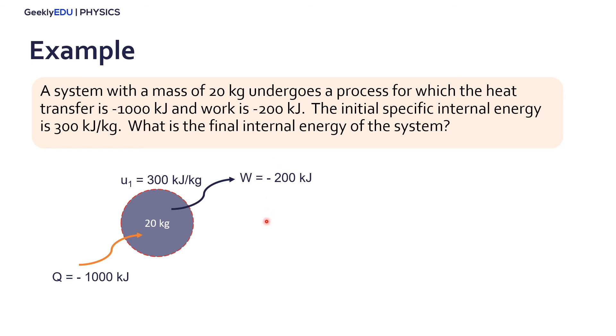It's very important to know the signs here and understand where the energies are going. So let's apply the first law of thermodynamics, we have the variation in internal energy is the heat transferred minus the work. So we know that the specific internal energy, we can multiply it by its mass, so we have the not the specific anymore, but just the initial internal energy. Let's add the values here we have, the mass, the specific internal energy, the initial specific internal energy, the heat transferred, and the work. So we can find that the final internal energy of the system is 5200 kilojoules.